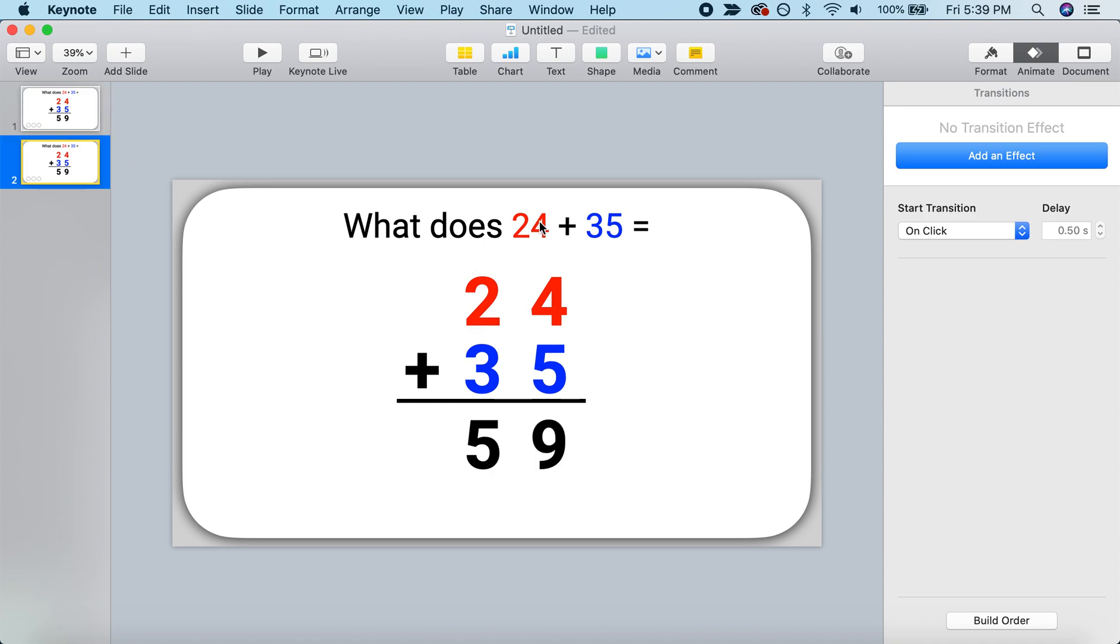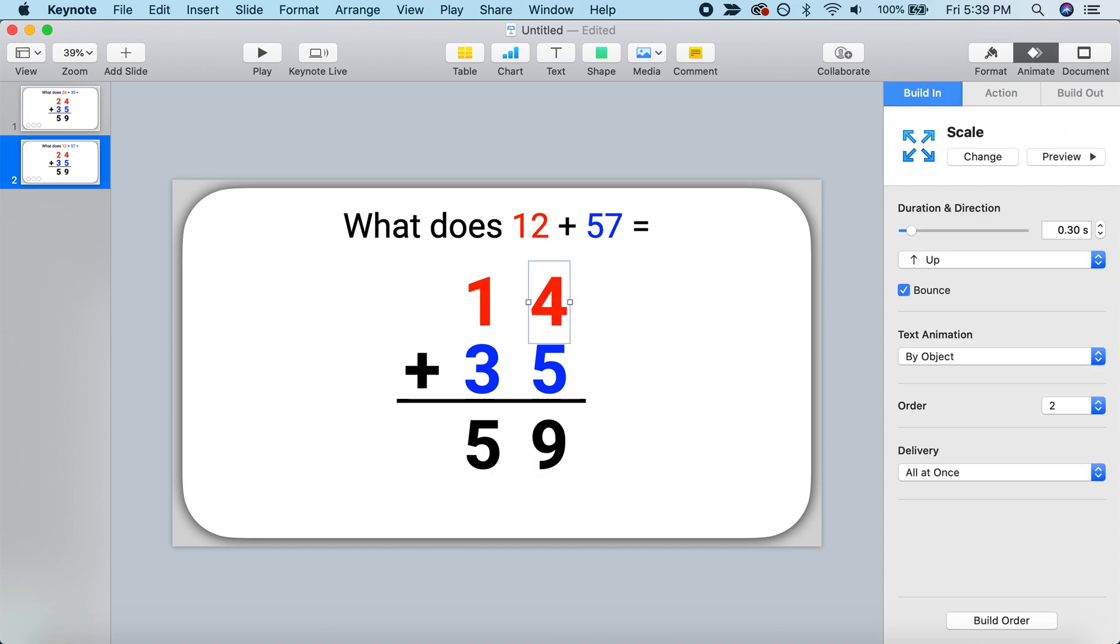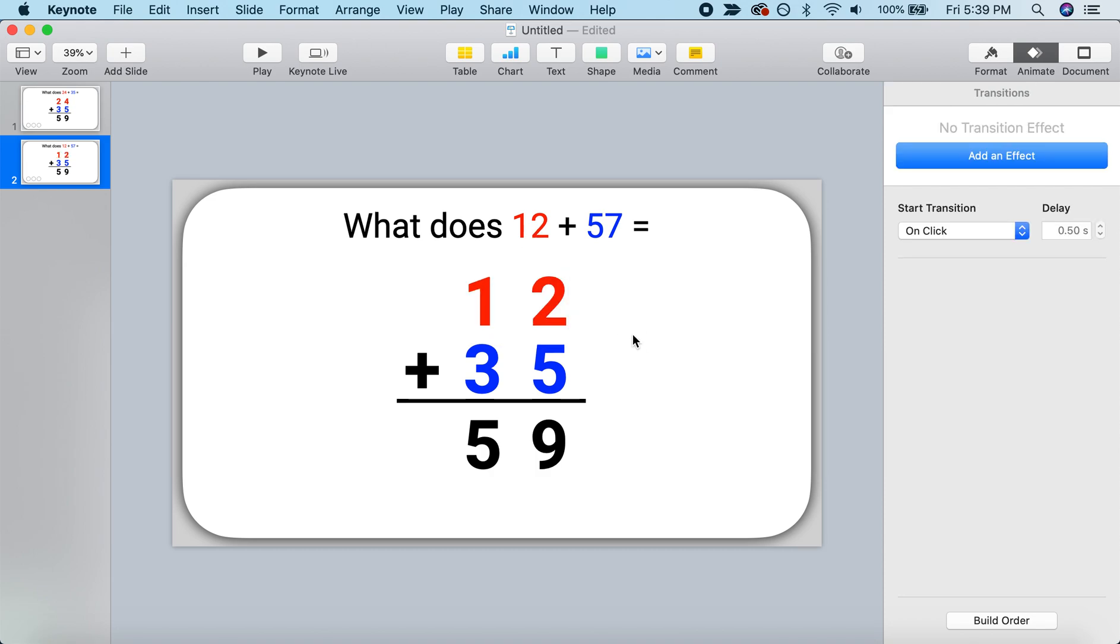In this second slide, let's come up with a new problem. So not 24 plus 35. Let's do, how about 12 plus 57. Okay. Well, now, instead of 24, I'll just change it to 12. Instead of 35, I just change it to 57.